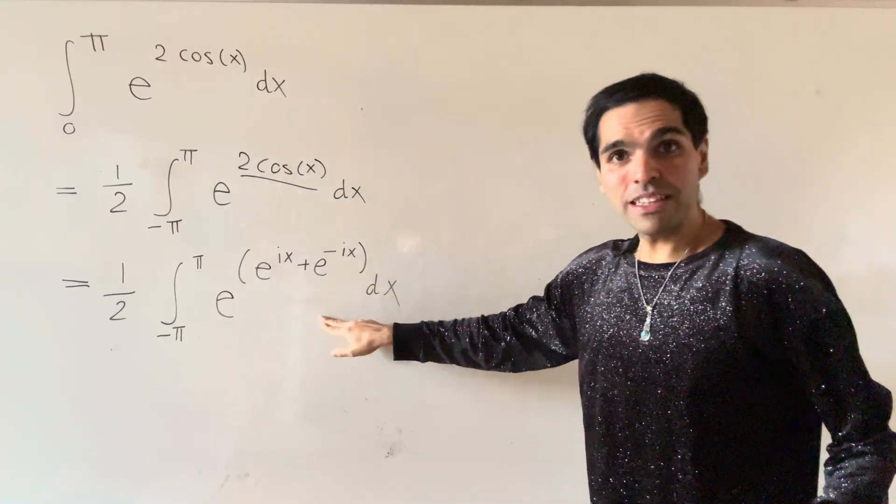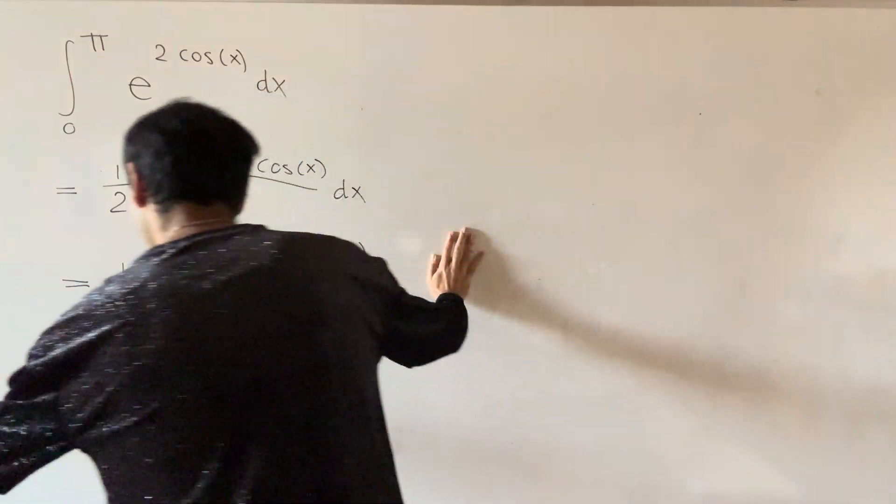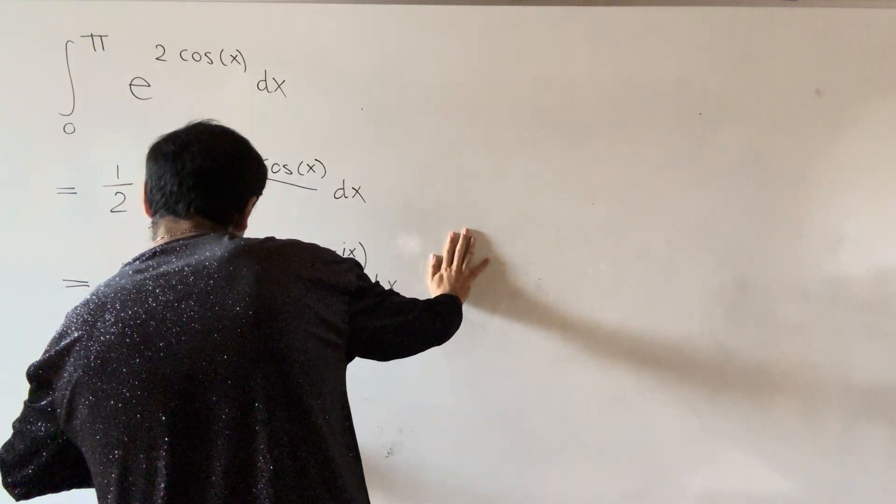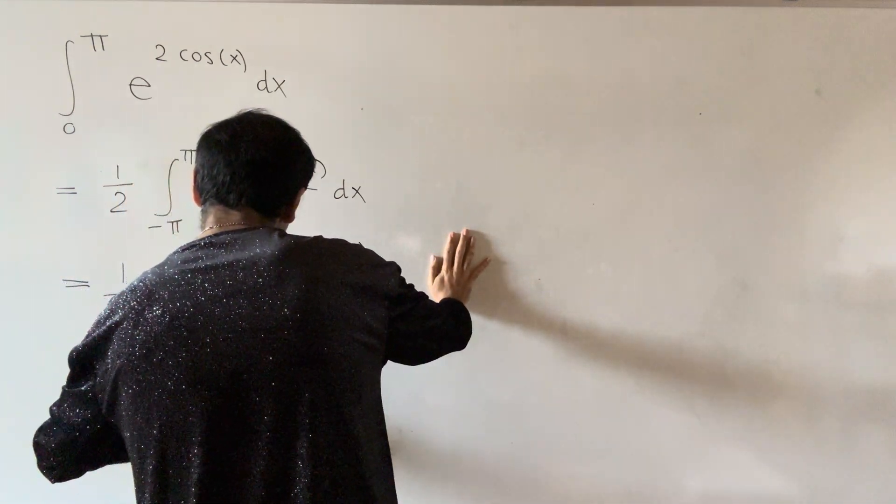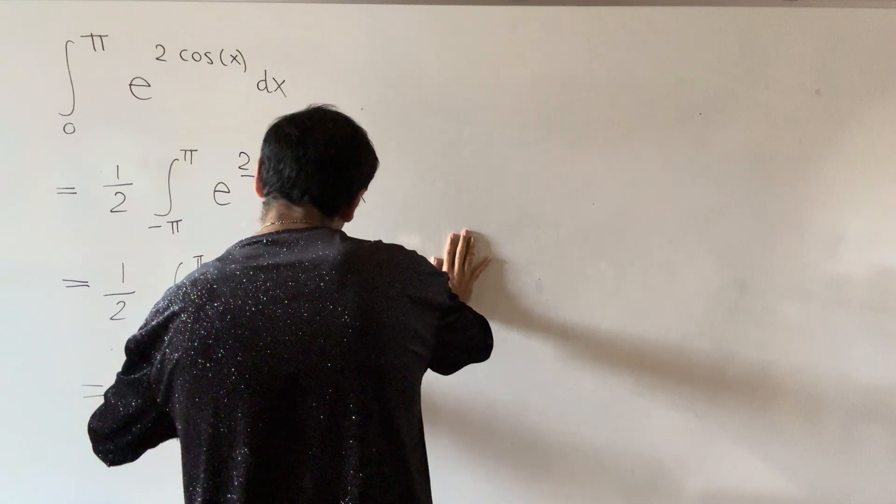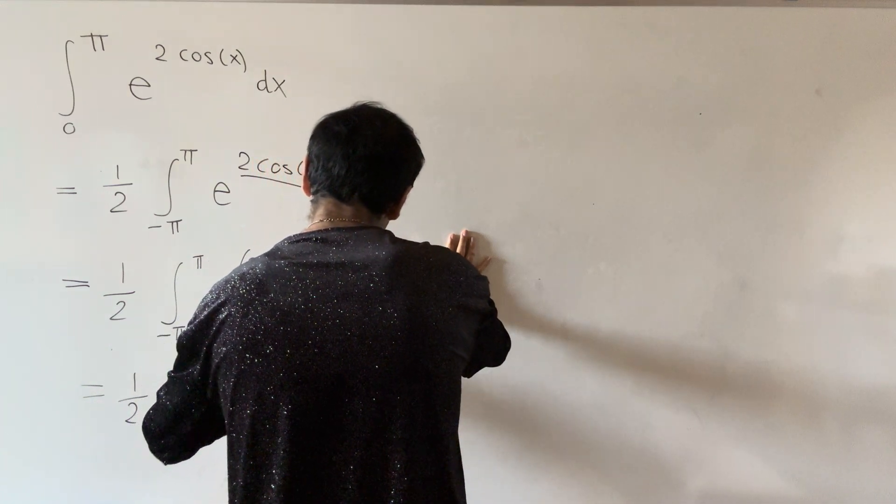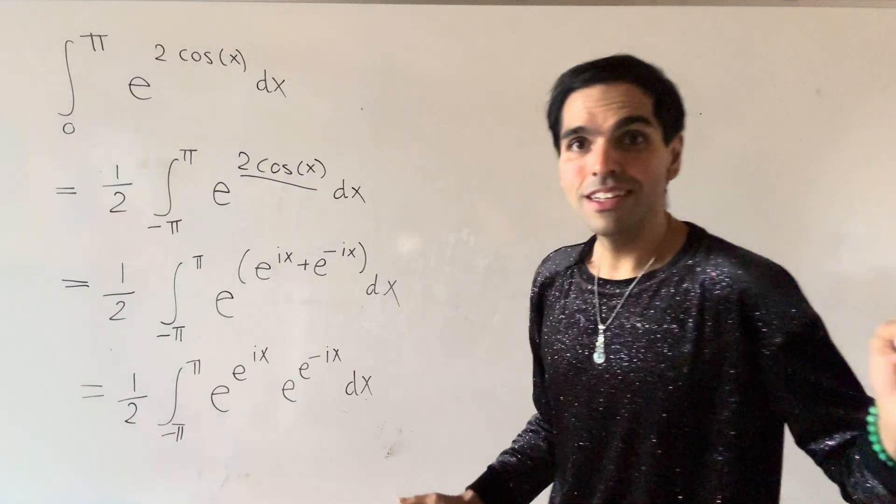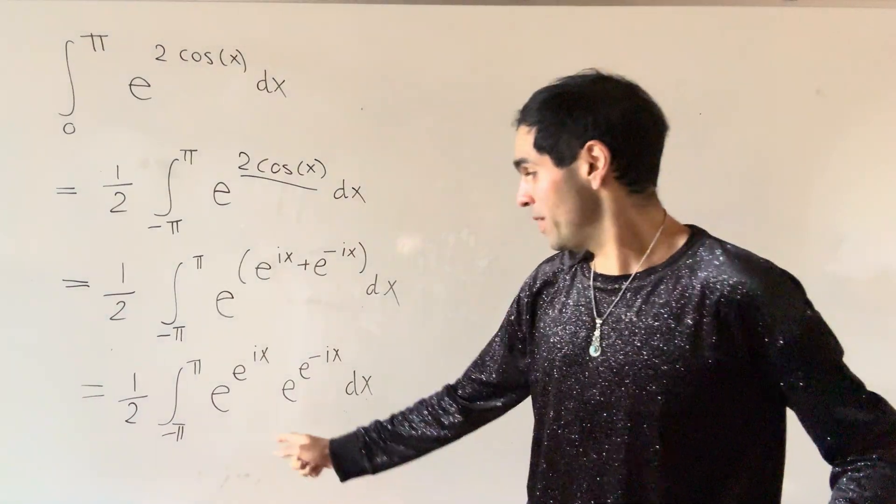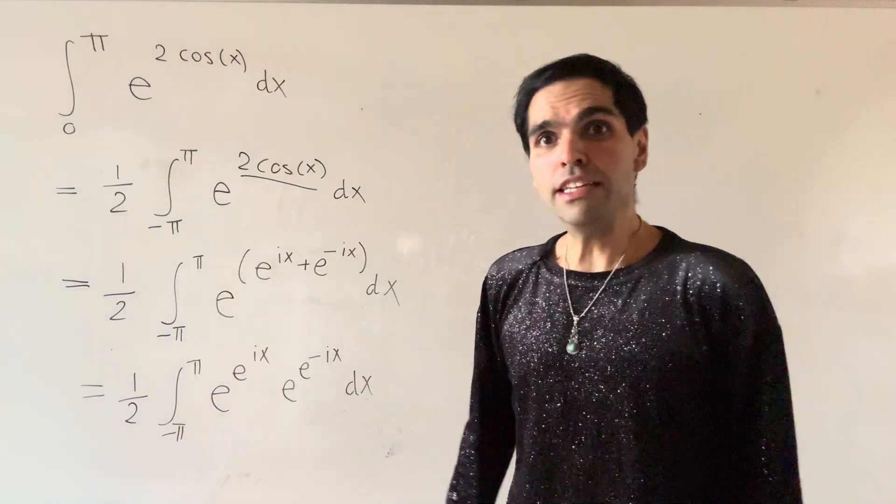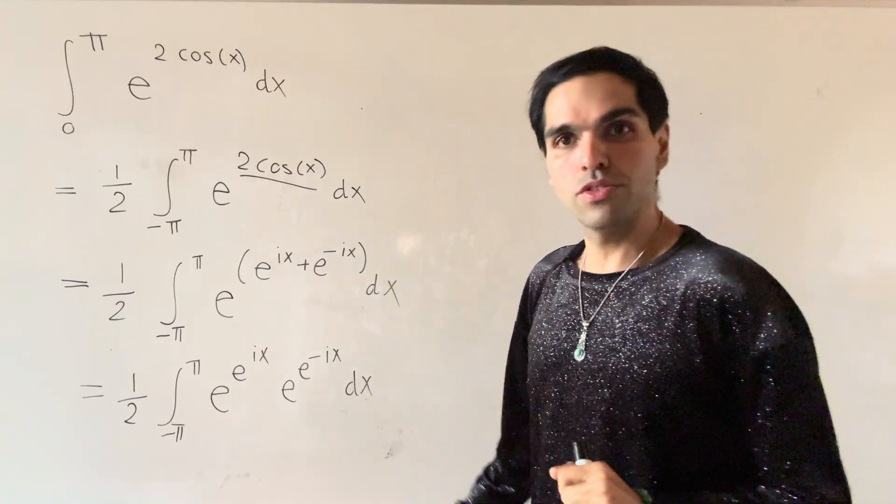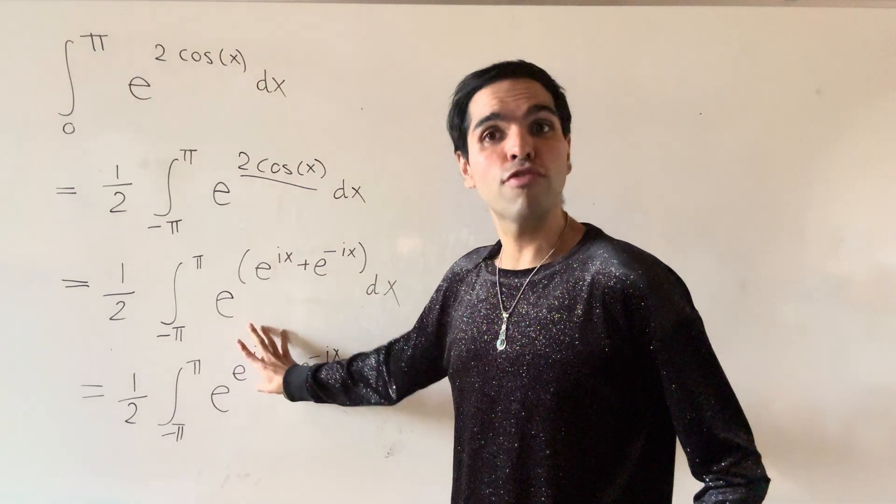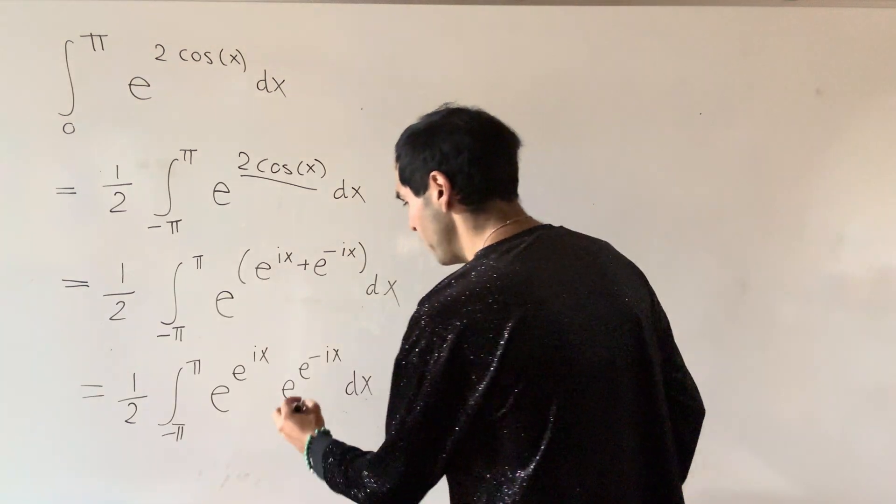And then let's split this up. So we get one half integral from minus pi to pi of e of ei x and an e, e to the minus ix dx. Which is crazy because you might be like, when is e to the e an answer? Well, in this case, as you will see.